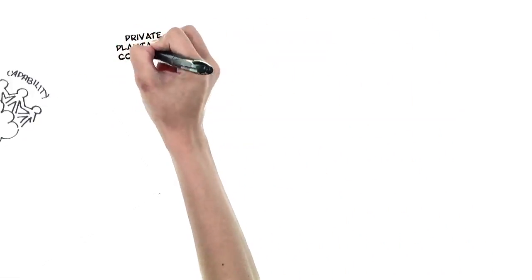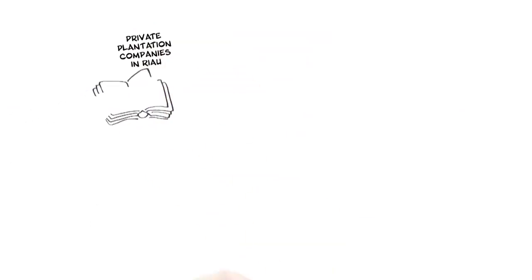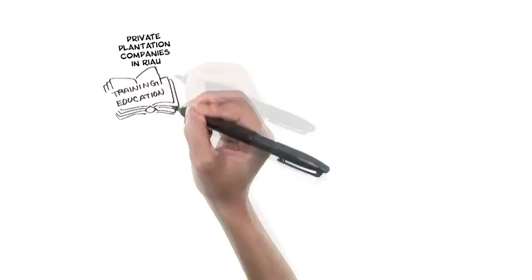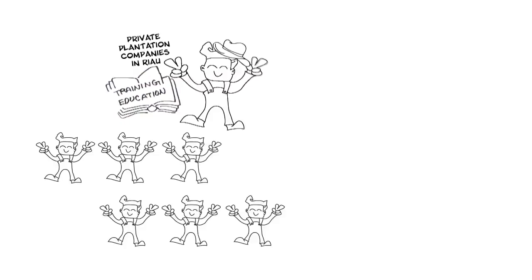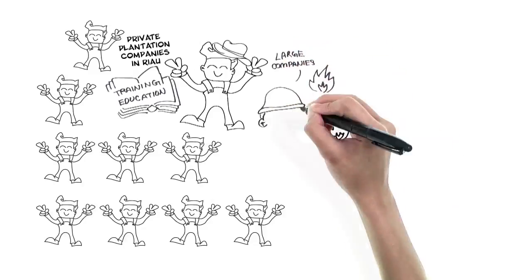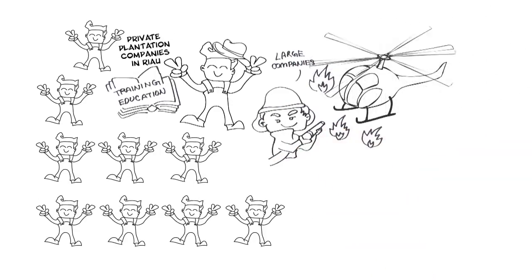Private plantation companies operating in Riau also have a big part to play in continuously training and educating local farmers. New jobs can also be offered to improve living standards. This will reduce the need for local villagers to commit illegal burning activities. Large companies are also leading the way by offering their resources to firefighting efforts in Riau.